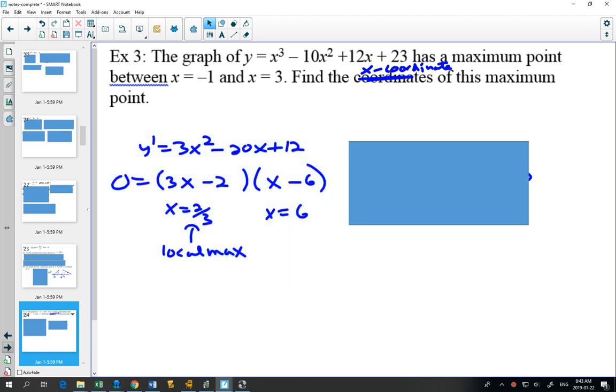So what is our derivative? In this case, it can be factored. And our critical points are at x equals 2 thirds and x equals 6.